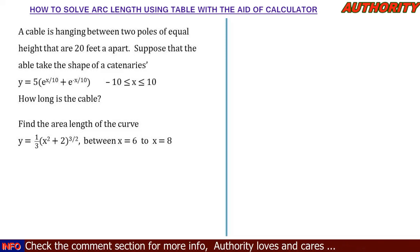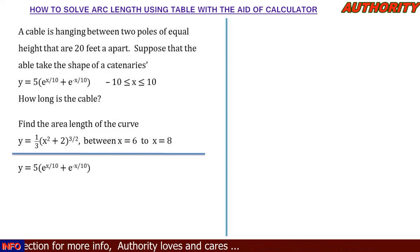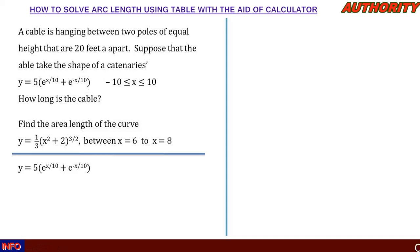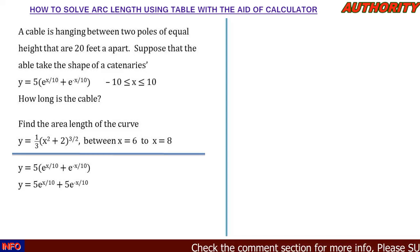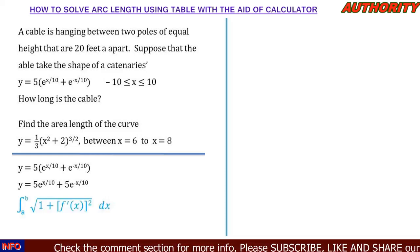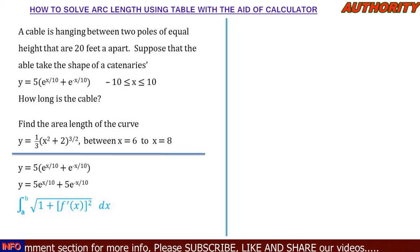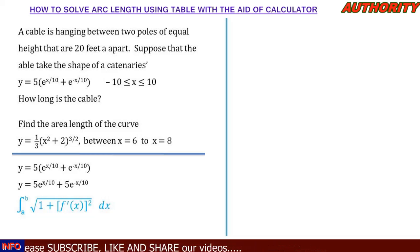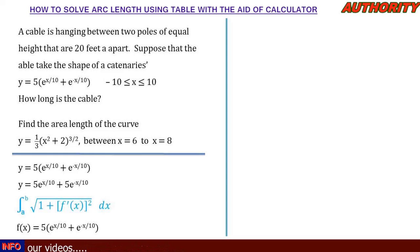For number one, we have y = 5(e^(x/10) + e^(−x/10)). We can expand using the factor of 5 to get: f(x) = 5e^(x/10) + 5e^(−x/10). We know that the arc length is given by the integral from a to b of the square root of 1 + [f′(x)]² dx, and this y is our f(x).